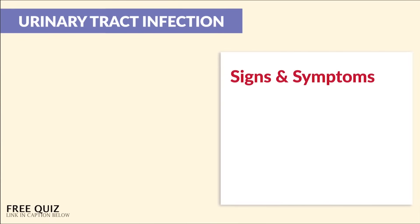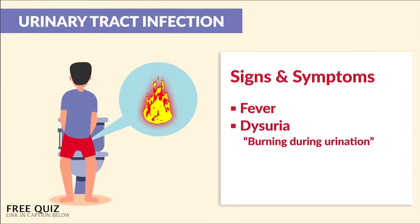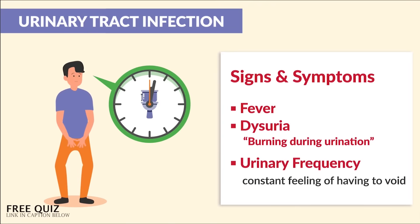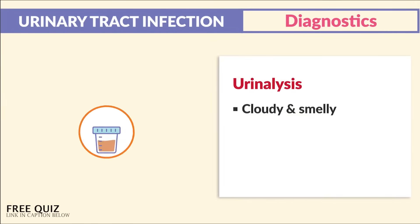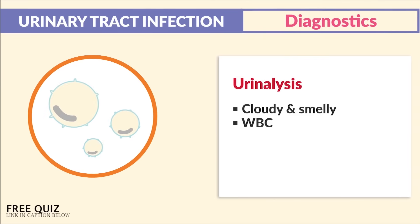The signs and symptoms are simple: just like any infection we get a fever, as well as dysuria — painful or difficult urination. Key term here: burning during urination, as well as urinary frequency — a constant feeling of having to void. For diagnostics, we use a UA, a urinary analysis.